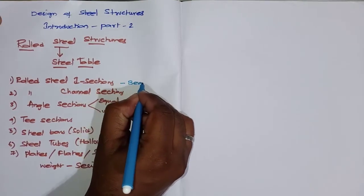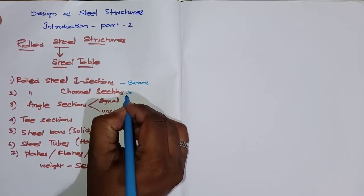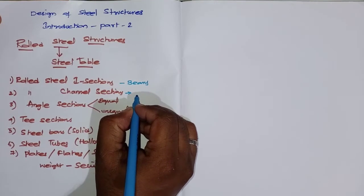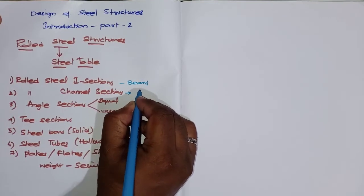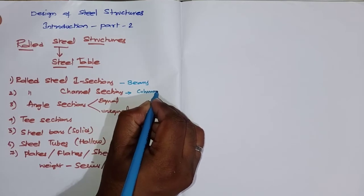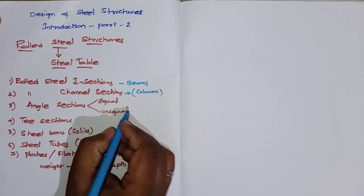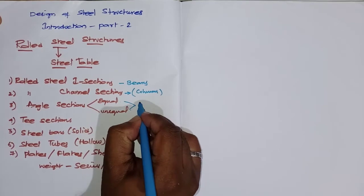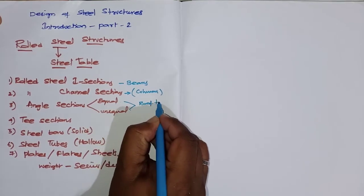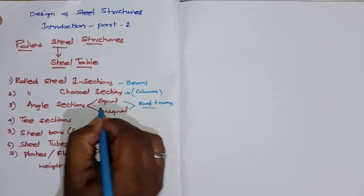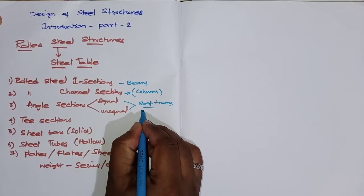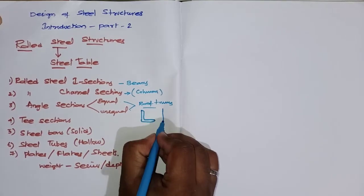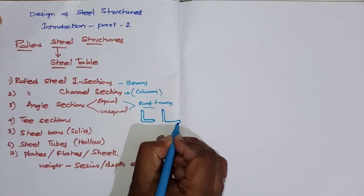A minimum of two channel sections can be used as column members or compression members. Equal and unequal angle sections are used in trusses and roof trusses.